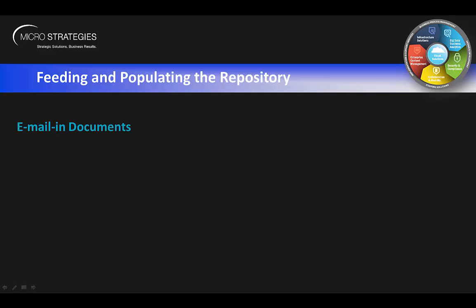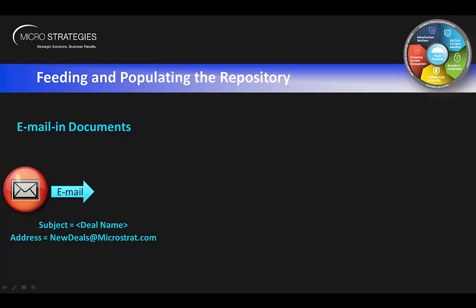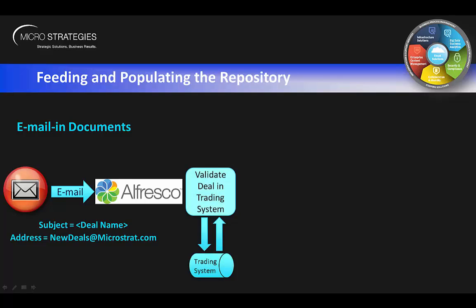When we talk about feeding and populating the repository, we talk about emailing in documents — it doesn't get much easier than this. A user creates an email, assigns a subject which is the deal name, addresses the email, and attaches the appropriate documents such as a pitch book or marketing material. Once they email that in, it goes directly into Alfresco by virtue of the address, where the deal name is automatically validated against the trading system to make sure it's a valid deal.